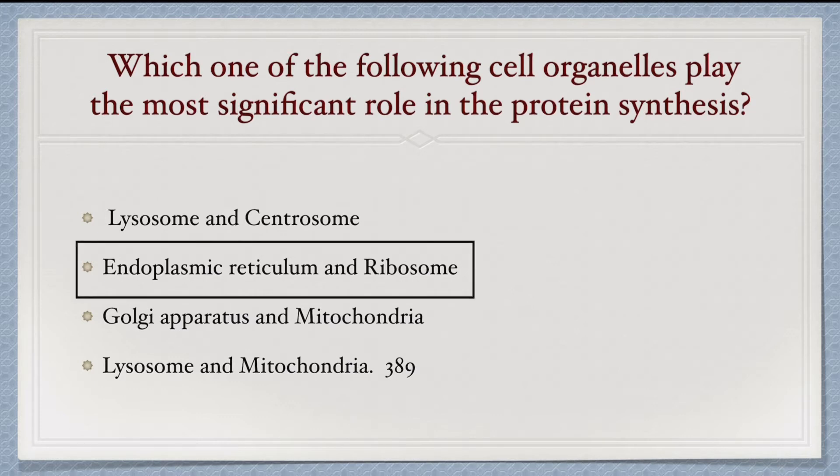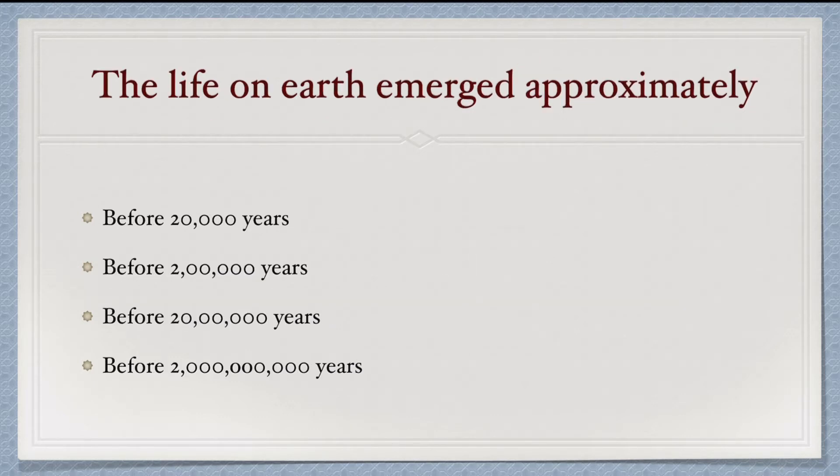Next question: the life on Earth emerged approximately when? The age of Earth is 4.6 billion years. Life emerged approximately 2 times 10 to the power 9 years ago. So option fourth will be the correct answer.